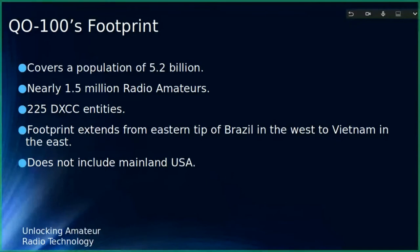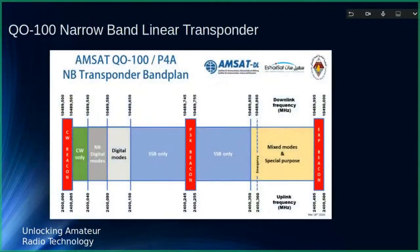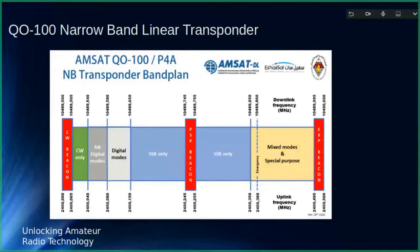This is the narrowband transponder band plan. You need to uplink at around 2.4 GHz to 2.4500 GHz for the narrowband. The band plan has CW at the bottom, then digital, SSB, and mixed modes at the top. It has three beacons — originally it only had two and was 120 kHz bandwidth, but it's now 250 kHz. They were worried initially that amateurs might misuse it, but they've realized we're reasonably responsible and opened it up.